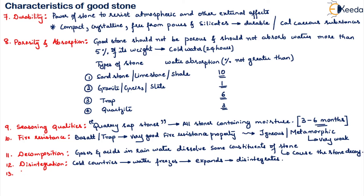The thirteenth property is reliability. A stone which is exposed to any condition should be reliable, meaning it should maintain good quality regardless of what it is exposed to.